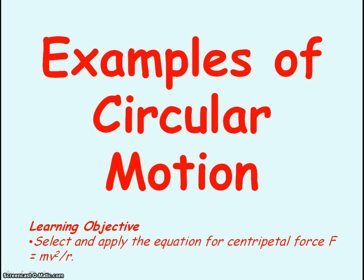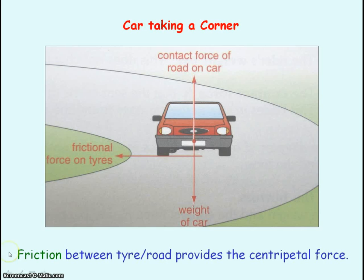We're going to be looking at examples of circular motion. For a car taking a corner along a level road, it is the friction between the tyre and the road that is providing the centripetal force.